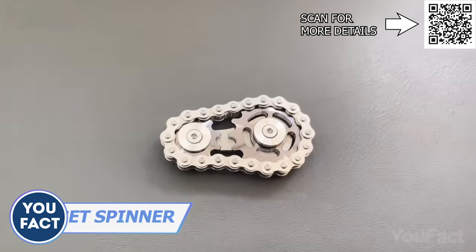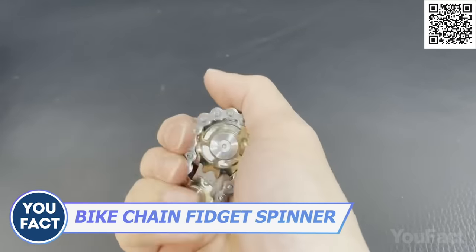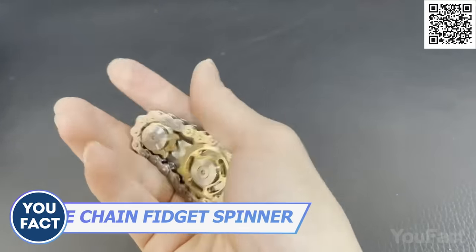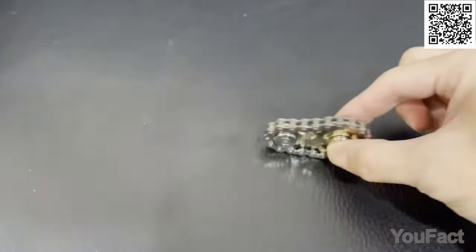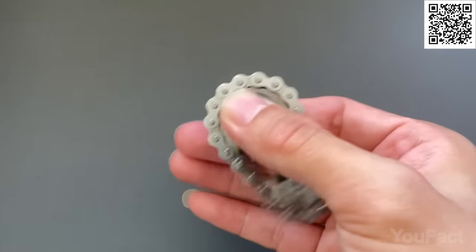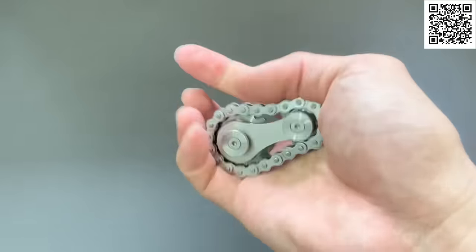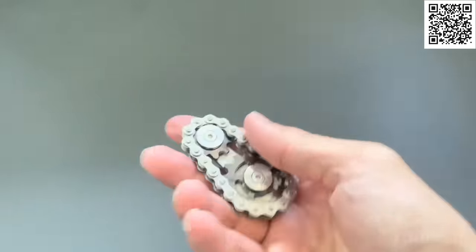Hold up, what's that? A bike chain? Oh yeah, baby. And those two bearings will have you cruising like you're on a real bike. Whether you want to swipe it back and forth on a table or spin it between your fingers like a pro, this bad boy is up for anything. Just don't forget to choose your favorite color, because you're going to be spending a lot of time with this sweet little fidget toy.